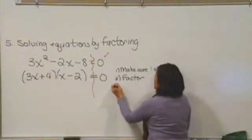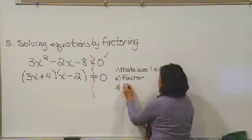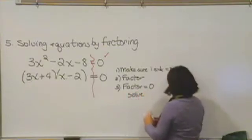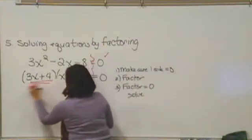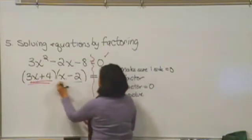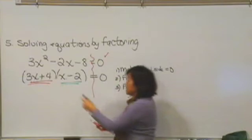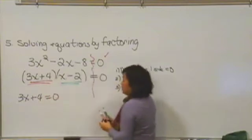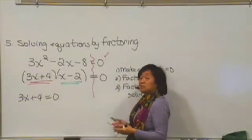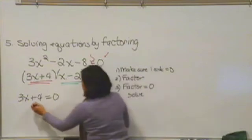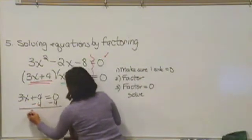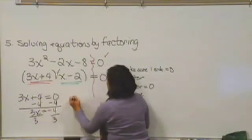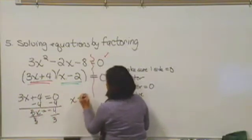And then what you're going to do is take each factor and say it equals zero, and then you solve. So for example, here I have 3x plus 4 is one factor, and x minus 2 is my other factor. I take the red factor, 3x plus 4, and I write 3x plus 4 equals zero. That's just a simple linear equation. I'll subtract 4 from both sides. 3x equals negative 4. I'll divide both sides by 3. And so one solution, x is equal to negative 4 thirds.